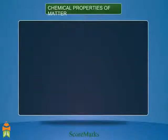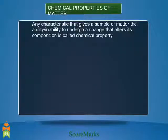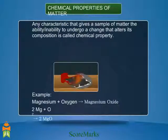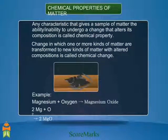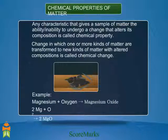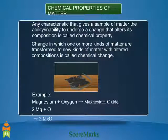Chemical properties of matter: any characteristic that gives a sample of matter the ability or inability to undergo a change that alters its composition is called a chemical property. For example, the ability of paper to burn. A change in which one or more kinds of matter are transformed into new kinds of matter with altered compositions is called a chemical change.